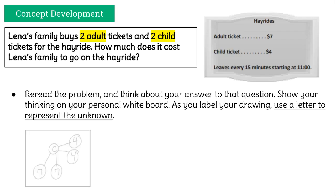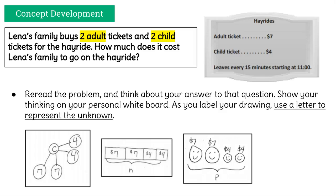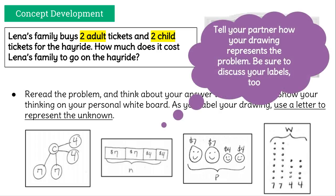Here are some ways you could have done this. One student chose to use a number bond — two fours for the two child tickets and two sevens for the two adult tickets, with C representing the total. Another student chose a tape diagram with two boxes of seven for adult tickets, two boxes of four for child tickets, and N as the letter for the whole. Another student drew pictures — two big happy faces for adults and two small happy faces for children — using the letter P for the sum. A fourth student used a different diagram with dots. Tell your partner how your drawing represents the problem and discuss what letter you used to represent the whole. If you didn't use a letter, go ahead and add one now.